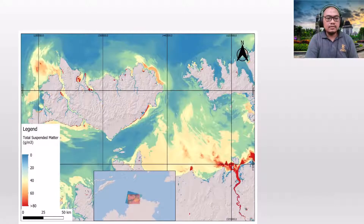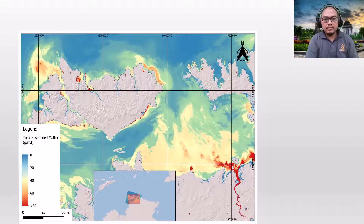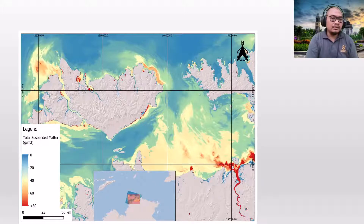This is the result for total suspended matter. We can see that the higher concentration of total suspended matter is found in the coastline and in the gulf areas, across every season — whether dry or rainy — showing a consistently high concentration of total suspended matter throughout the study period.